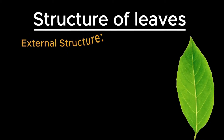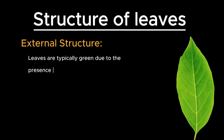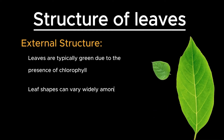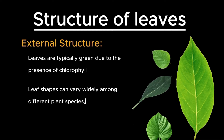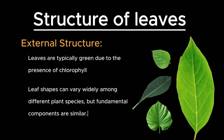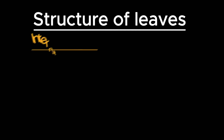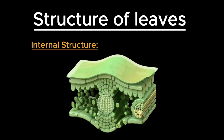From the outside, leaves are typically green due to the presence of chlorophyll, the pigment essential for photosynthesis. Leaf shapes can vary widely among different plant species, but the fundamental components are similar. Now, let's discuss this internal structure in detail.